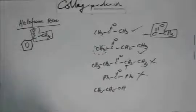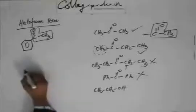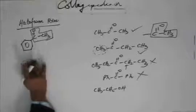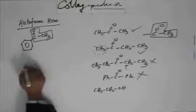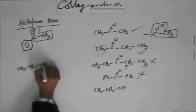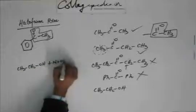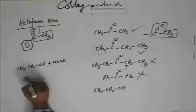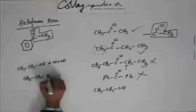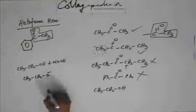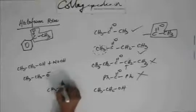Now, how this alcohol is going to show a haloform reaction. When we take NaOH and halogen, if we take this alcohol — suppose we take ethanol — then the base that we have taken will show an acid-base reaction with this, and we are going to get ethoxide. This ethoxide is going to do the same thing as it was done by C⁻.